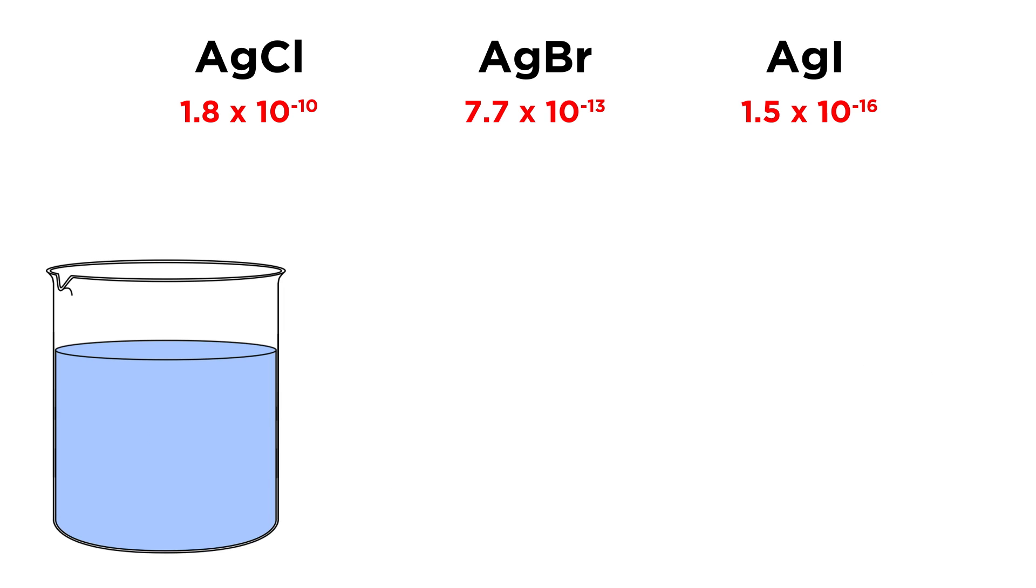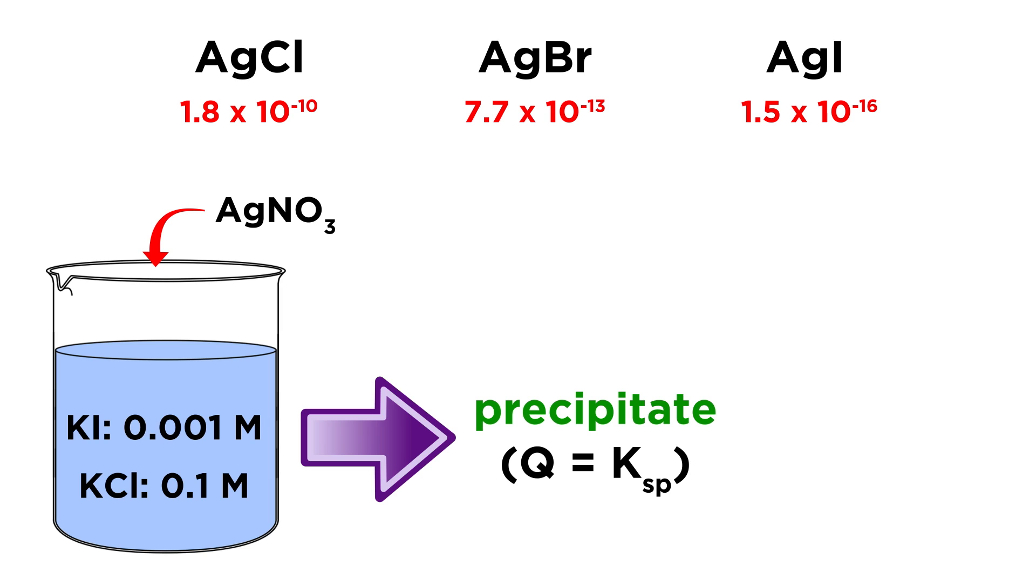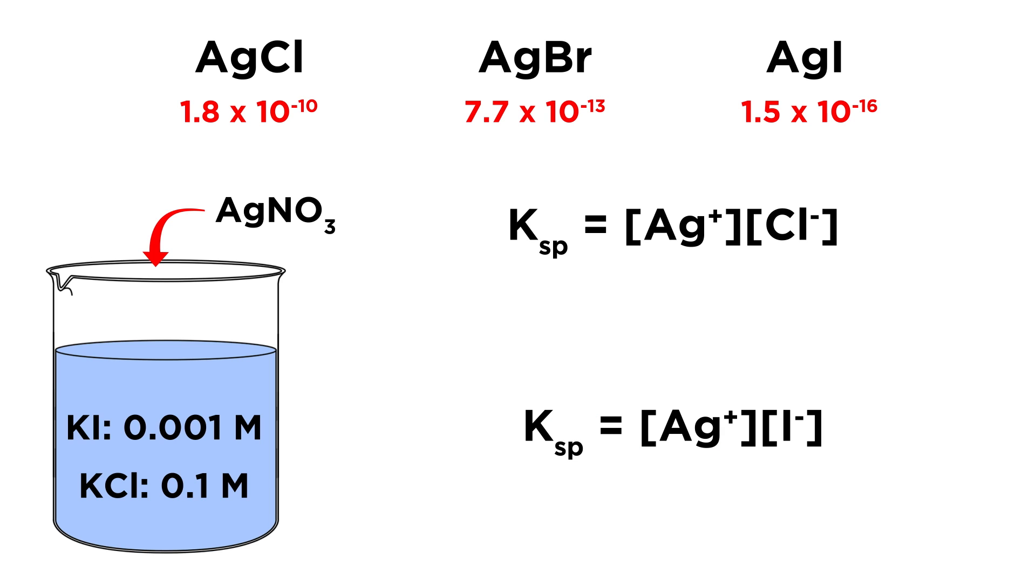We can see selective precipitation in action even when the halide ion concentrations are unequal. Let's say we have a solution that is 0.001 molar in potassium iodide, and 0.1 molar in potassium chloride, and silver nitrate is slowly added, introducing silver ions to the solution. We know that a precipitate, whether silver chloride or silver iodide will form when Q equals KSP, so let's take the solubility product expressions for each possible precipitate, silver chloride and silver iodide, and find the concentration of silver ion upon which each precipitate will form.